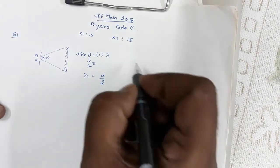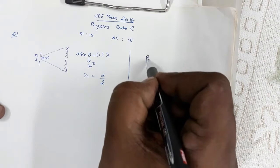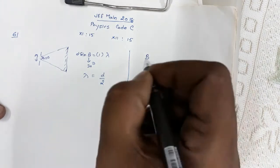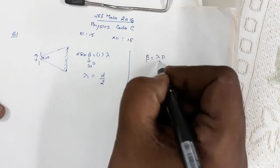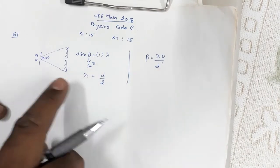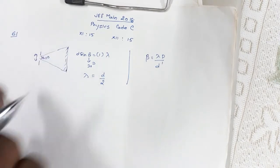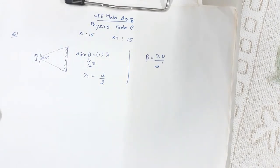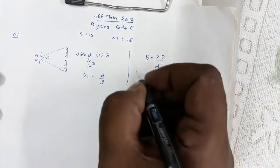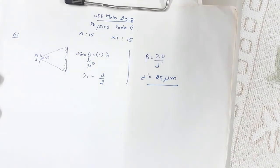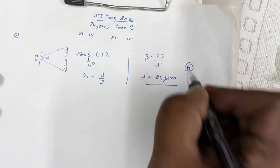For the second part, the fringe width β. Another slit is brought in and the fringe width is given; you are asked to calculate the slit separation. Fringe width β = λD/d', where d is the slit width and d' is the separation between the two slits. Substituting the values given in the question, you get d' = 25 micrometers.